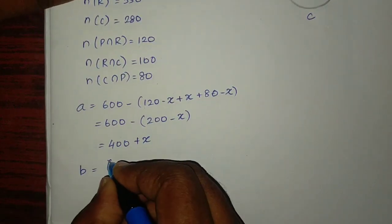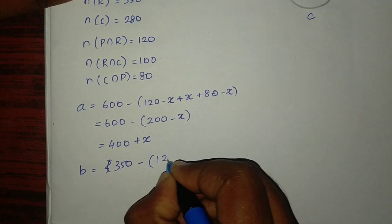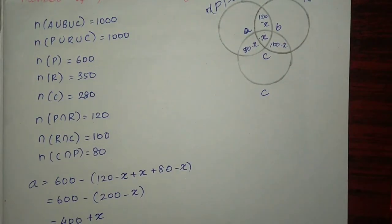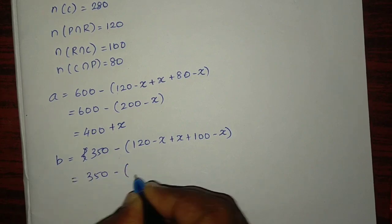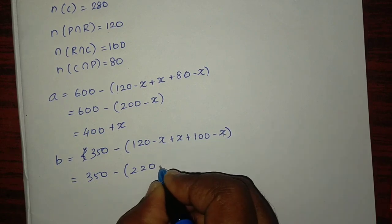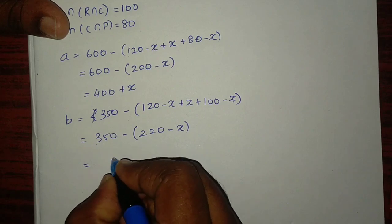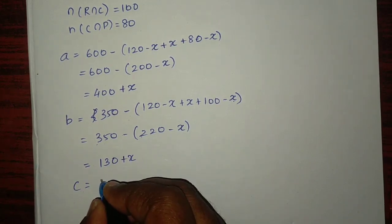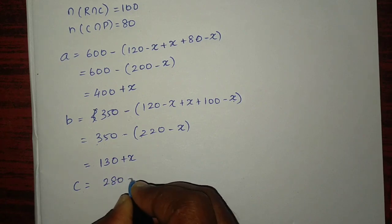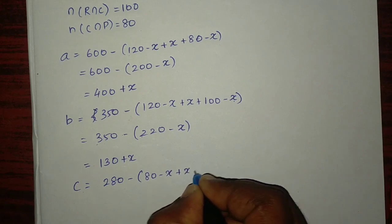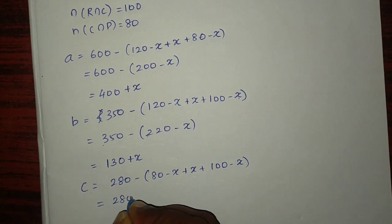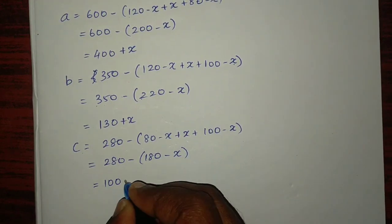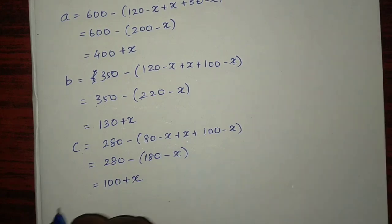For region B (only ragi): 350 minus (120 minus x) plus x plus (100 minus x) equals 350 minus 220 plus x equals 130 plus x. For region C (only corn): 280 minus (80 minus x) plus x plus (100 minus x) equals 280 minus 180 minus x equals 100 plus x.